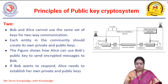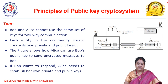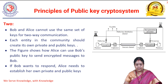Alice and Bob cannot use the same set of keys for two-way communication. If Bob wants to send a message to Alice, then Bob has to take Alice's public key to encrypt. Whenever a sender wants to send a message to a receiver, he has to encrypt the message using the receiver's public key only, and then the receiver can open the message using its private key. Each entity in the network should create its own private key and public keys.